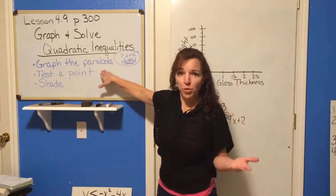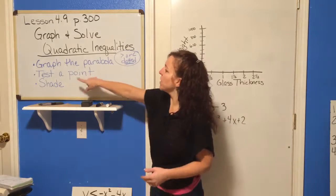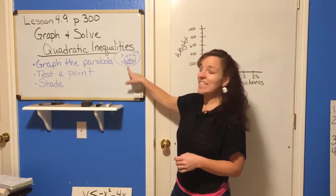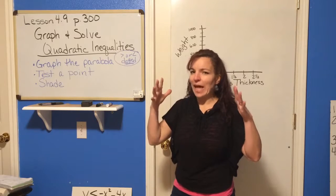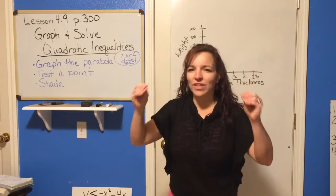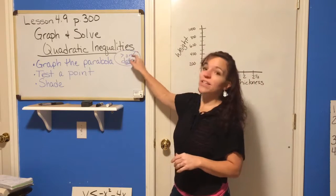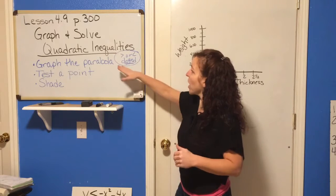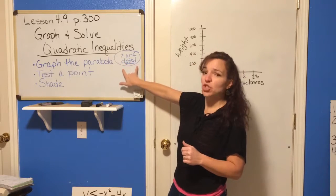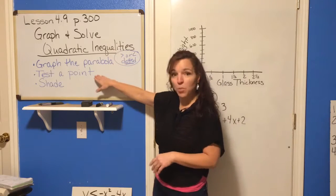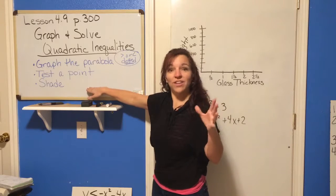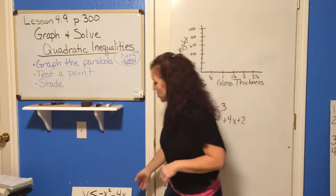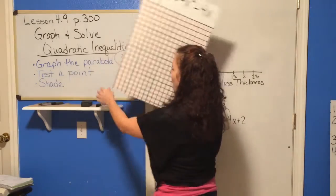If you know how to graph equations, graphing the inequalities is really easy. The only difference is: first, graph the parabola as if it were an equation. Make sure that if it's greater than or less than, you use a dotted line to show we approach but are not on the line. If it's greater than or equal to, or less than or equal to, then it is a solid line — just as with linear inequalities. Then test a point and shade the side that is true.